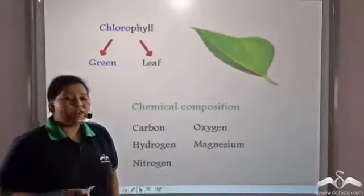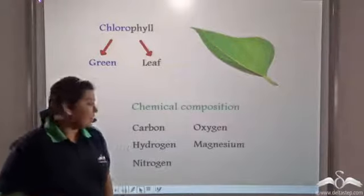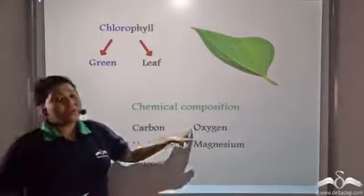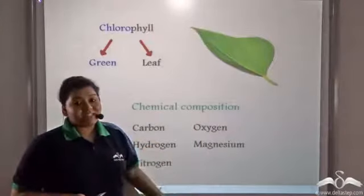The chemical composition of chlorophyll is carbon, hydrogen, nitrogen, oxygen, and magnesium.